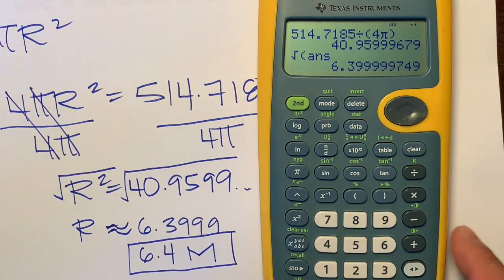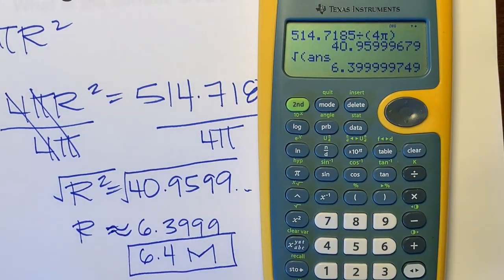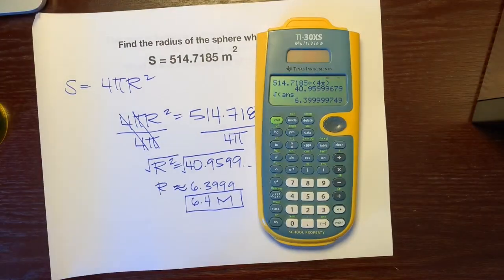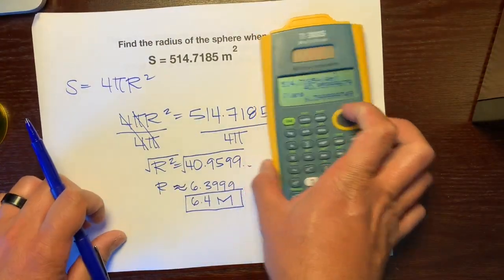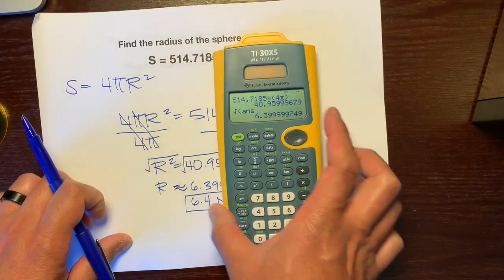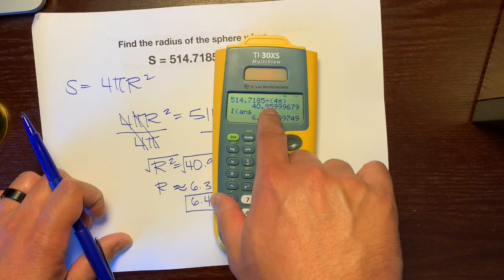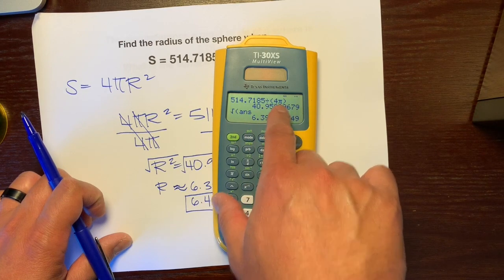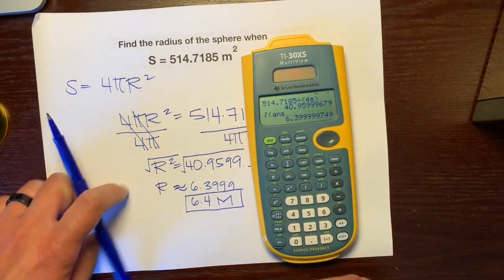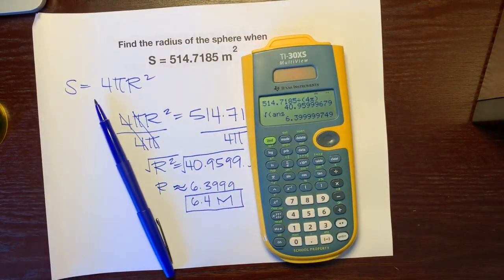I hope this helps. One big thing: don't forget to put the parentheses when you're dividing by 4 pi. Have a great day.